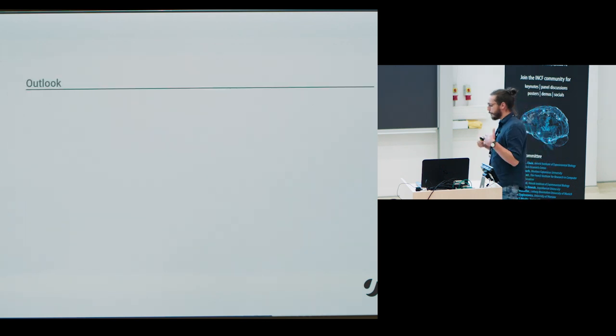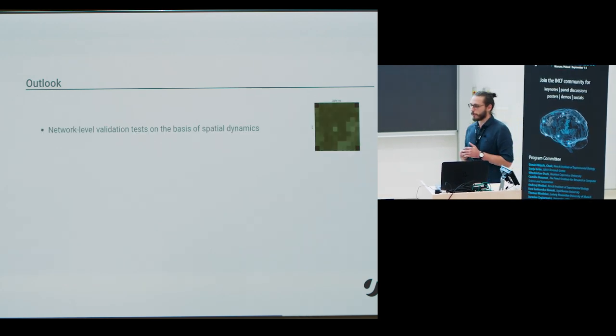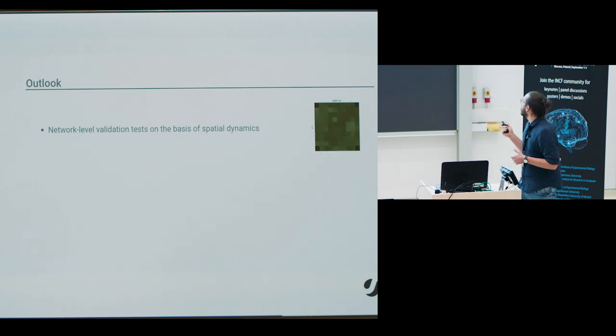So, to take a step back, I'll give some broader context where we are going with this. So, with NetworkUnit, we mostly focused so far on measures quantifying, characterizing the network activity based on pairwise and single measures of spiking activity. And we are now starting off also integrating measures corresponding to the spatial dynamics of networks. Here, for example, as you see in an LFP recording of an implanted electrode array which shows wave-like behavior of the activity.